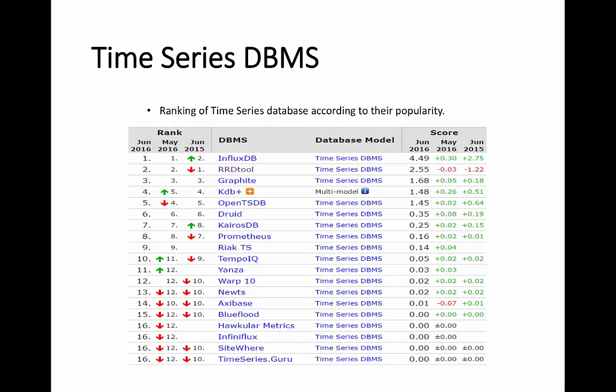Informix is a typical commercial time series database, but there are more open time series databases which are much more widely used. This table shows a ranking of time series databases ranked by DB-Engines according to their popularity. Most of them, like InfluxDB and OpenTSDB, are widely used and well supported. Next, my partner will introduce two typical TSDBs, starting with OpenTSDB.